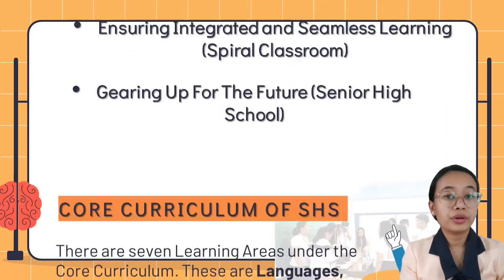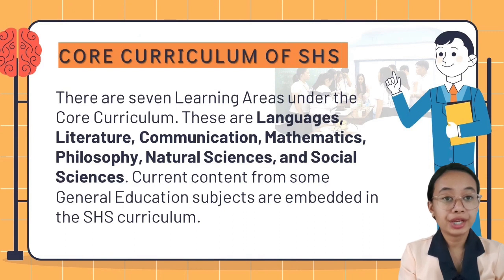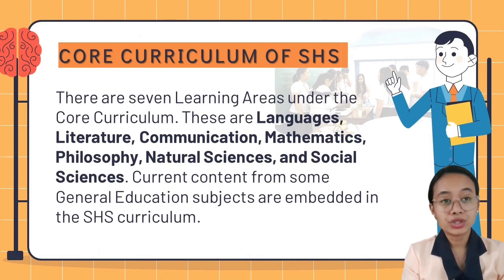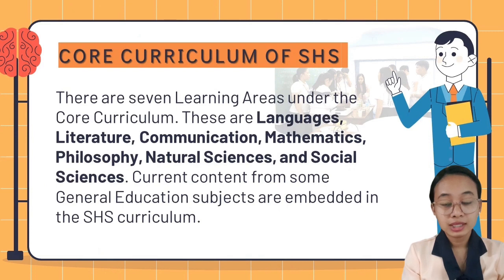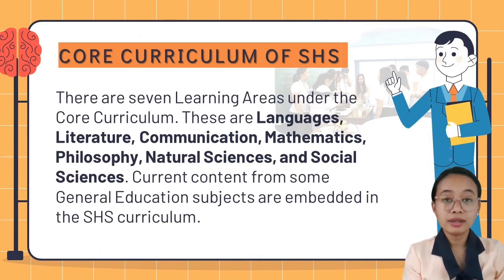The core curriculum in senior high school has seven learning areas: languages, literature, communication, mathematics, philosophy, natural sciences, and social sciences. The current content from some general education subjects is embedded in the senior high curriculum.